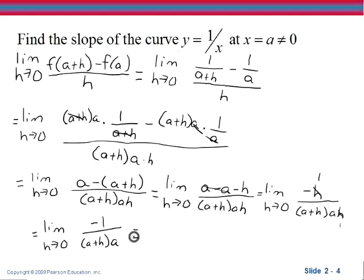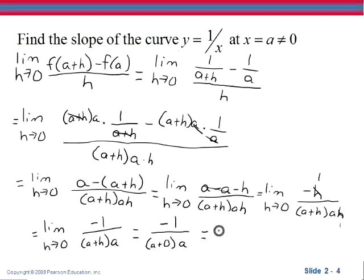That leaves us with the limit as h approaches 0 of negative 1 in the numerator and (a + h) times a in the denominator. Now we are at a fraction that is not undefined for h equals 0, so we can plug in 0, giving us negative 1 divided by (a + 0) times a. Since a + 0 is a, we have negative 1 over a times a, or negative 1 over a squared. So the slope of the curve y equals 1 over x at x equals a is negative 1 over a squared. We can choose any a not equal to 0 and plug into this formula to find the slope at that x value.